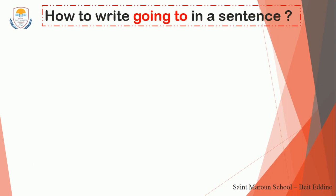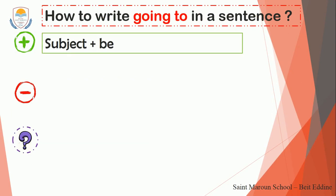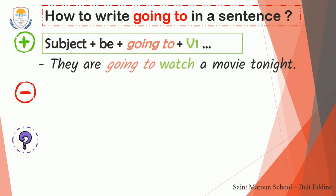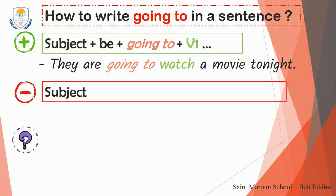Now, how to write 'going to' in a sentence? It has three forms. The positive form is: subject, then the verb to be, then 'going to', then verb one. I use the verb to be because 'going' has -ing, so I must use a helping verb. For example: 'They are going to watch a movie tonight.' The negative form is: subject, then the verb to be with 'not', then 'going to' with verb one.